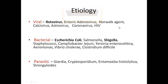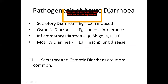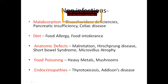Shigella is the most common cause of dysentery, and the species is Shigella flexneri. Parasitic diarrhea is mostly seen in the immunocompromised. Other non-infectious causes include malabsorption, diet, and anatomical differences, though these are less important.